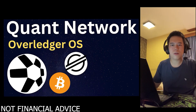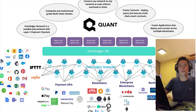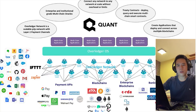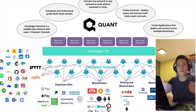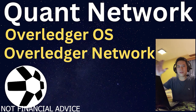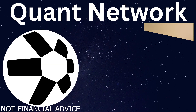Now I want to talk about the Overledger Network. The Overledger Network is made up of the Overledger OS users. Users of the Overledger OS on the Overledger Network can share their data, their apps, and resources, and monetize them. That is what the Quant Network is all about — it's made up of the Overledger OS and the Overledger Network.